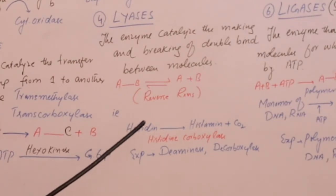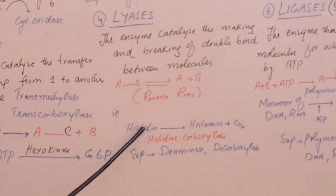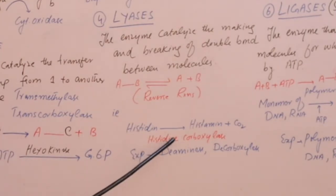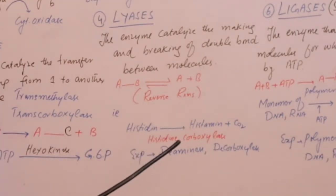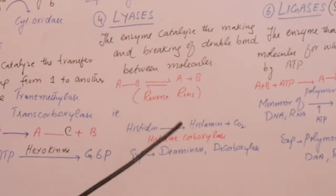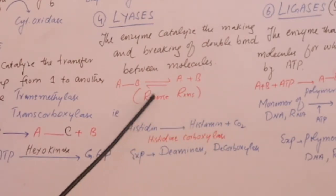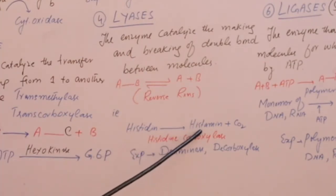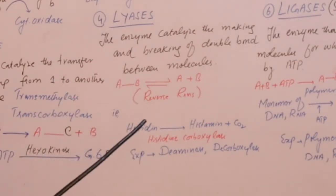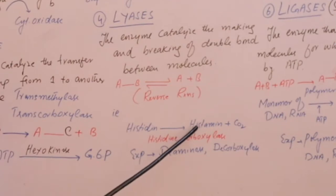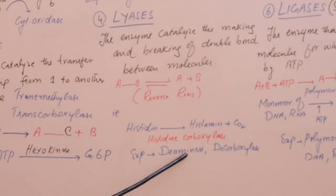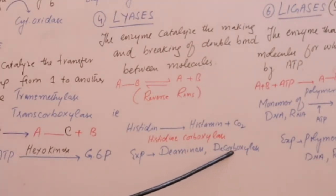A specific example: histidine is an amino acid. Histidine carboxylase enzyme acts on it, breaking it into histamine and carbon dioxide. The enzyme breaks the double bond and converts it to a single bond, removing CO₂ and forming histamine.